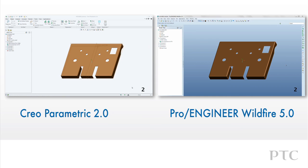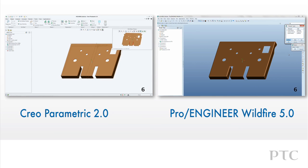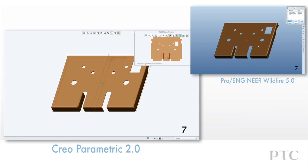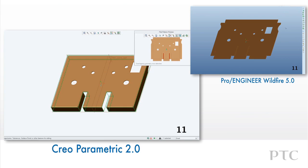CREO PARAMETRIC introduces many enhancements to make the process of creating sheet metal parts faster than Pro Engineer Wildfire. One of the biggest enhancements in CREO PARAMETRIC is the flat pattern preview function.